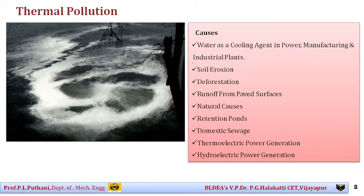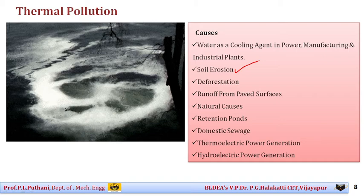Another cause is soil erosion related to thermal pollution. When water coming out from power plants and manufacturing industrial plants continuously adds to water bodies, the water level goes on increasing. The surrounding soil content near lakes or rivers gets taken away as the water overflows the banks, causing degradation of vegetation and damage to plant and animal life.